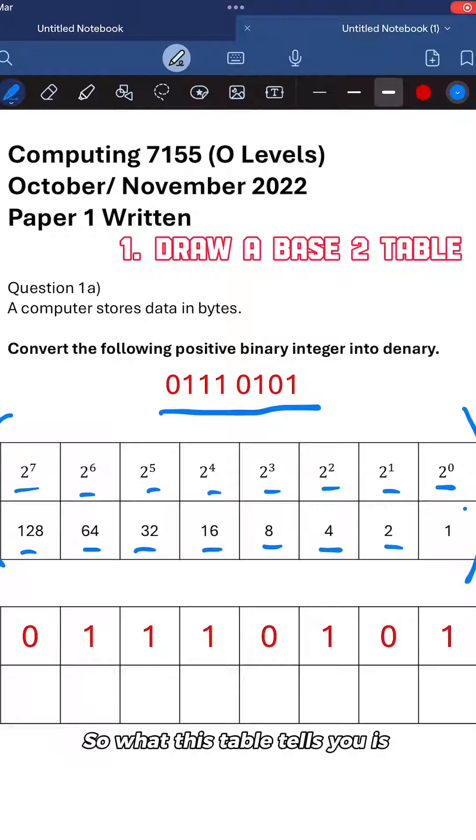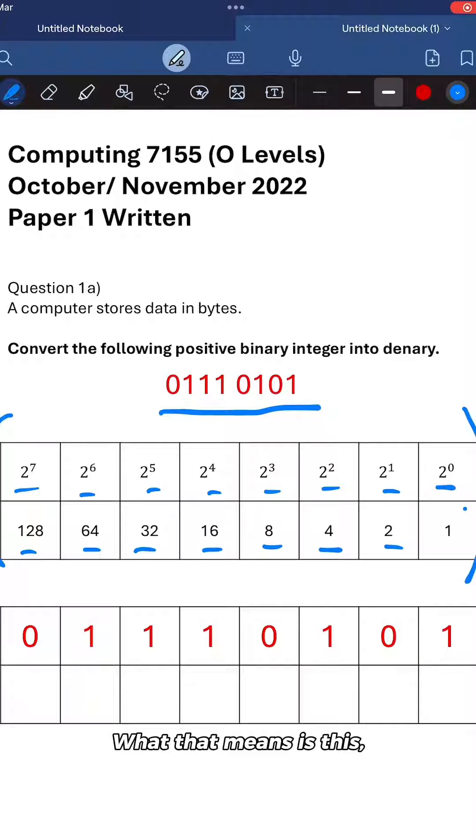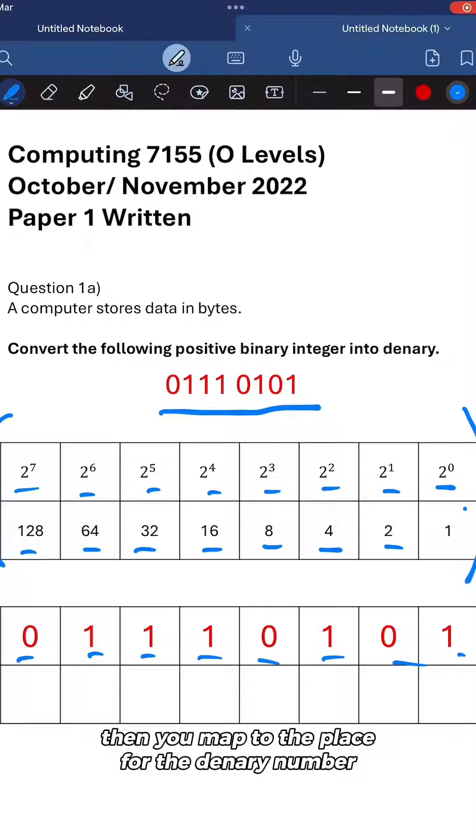So what this table tells you is how the binary maps to a denary integer. Once you have this table, you write out your number that you want to convert. So in this case, it's 0111 0101. Now with this, then you map to the place for the denary number.